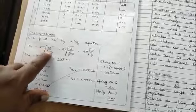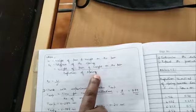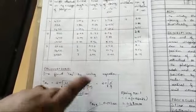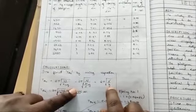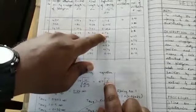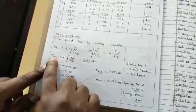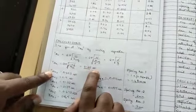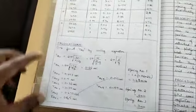To find the theoretical time period, we use the formula: 2π times the square root of (W / ks) times g, where ks is the weight of the pan plus the weight on the pan divided by the deflection of the spring, so W/delta. The W values cancel and deflection goes to the numerator divided by gravity. Gravity is 9.81, 2π is standard, and we put the value of delta — which is 2.54 cm for the first trial — giving a theoretical time of 0.26 seconds.